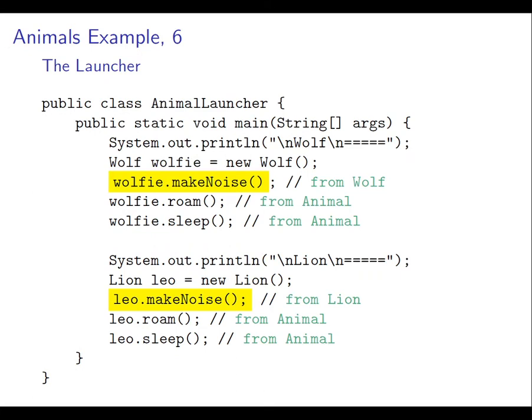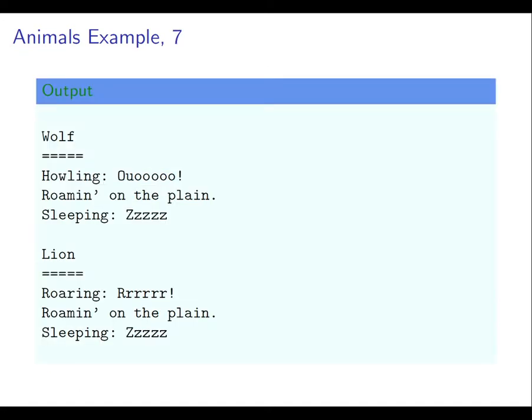If we then think about how we use those different classes, we get code like this. We can end up creating ourselves two different animal objects, one of class Wolf and one of class Lion. If we send each of them each of the three different messages that they understand, you see what happens. The MakeNoise method is invoked from the Wolf class or from the Lion class respectively, whereas the Roam and Sleep methods are invoked directly from Animal. That's the only version there is because the specific animals don't override them, and you get output like this.